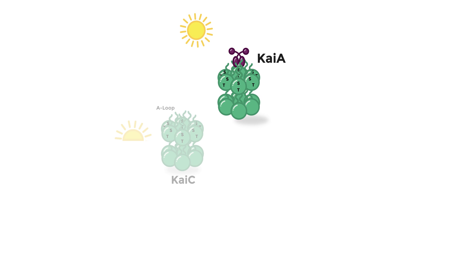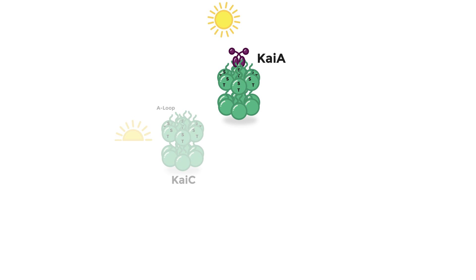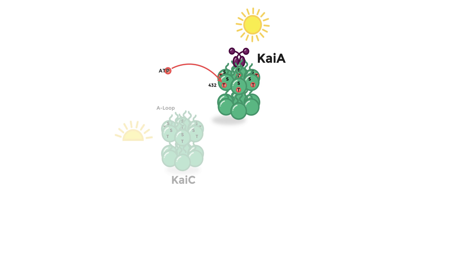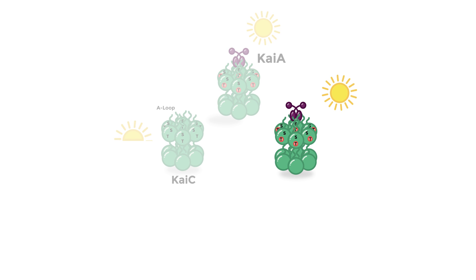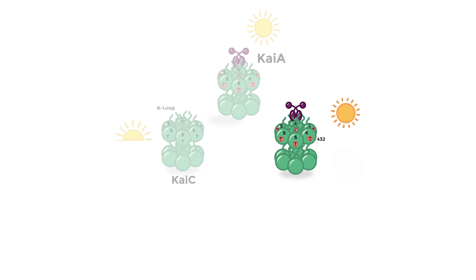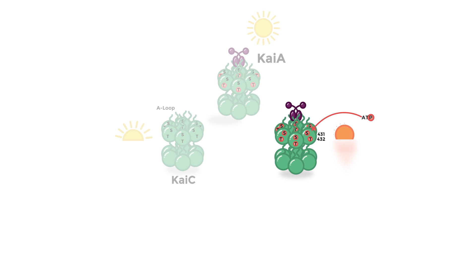Throughout the day, KaiA binding to A-loops holds them in an out position, stimulating KaiC autokinase activity. The threonine at position 432 becomes phosphorylated. Phosphorylation of threonine 432 changes the stiffness of the KaiC structure such that it is easier for the serine at position 431 to become phosphorylated.